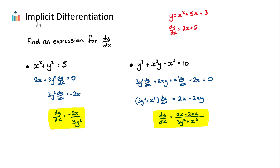If we do have y equaling a function of x or a constant on the right-hand side, this is easy — the derivative dy/dx is just 2x + 5. We should be familiar with this using our differentiation rules. But with the two examples here, we don't have y equaling everything on the other side in terms of x, so this is why we need to use implicit differentiation.